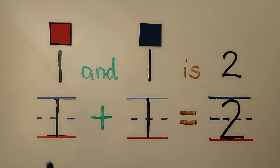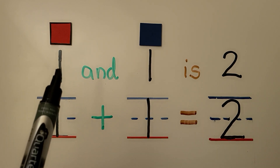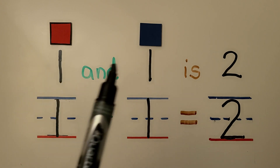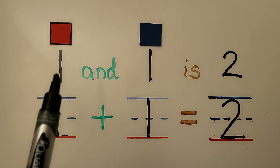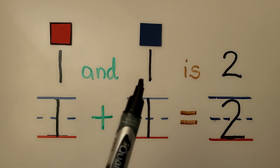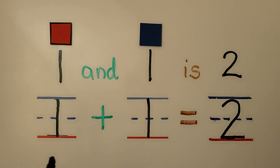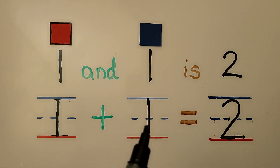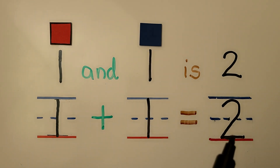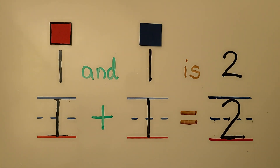An addition sentence goes across. We have one red counter and one blue counter — we have one and one more. One and one is two. We can write the addition sentence: one plus one is equal to two. An addition sentence has numbers, a plus symbol, and an is equal to symbol.